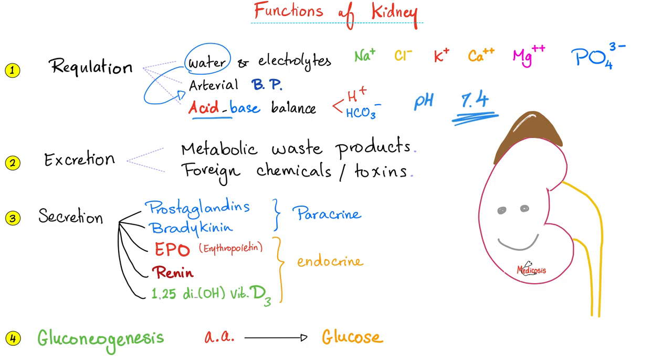And now to the secretory function of the kidney. Paracrine function: prostaglandins and bradykinin. Endocrine, this is today's topic: erythropoietin, renin, and the active form of vitamin D, also known as 1,25-dihydroxycholecalciferol, also known as calcitriol. Why triol? Tri means three.